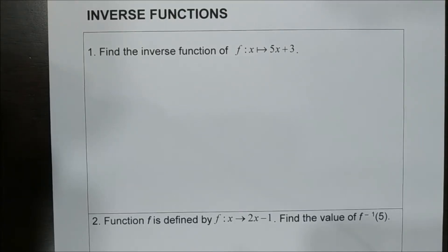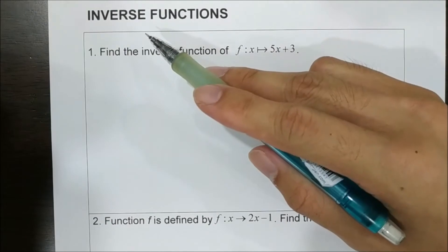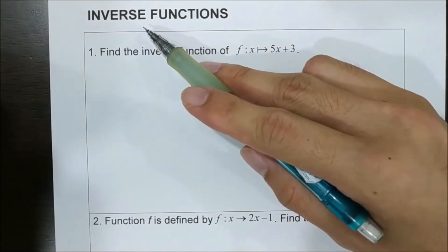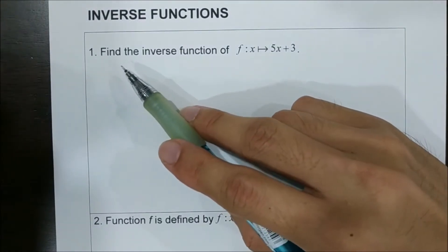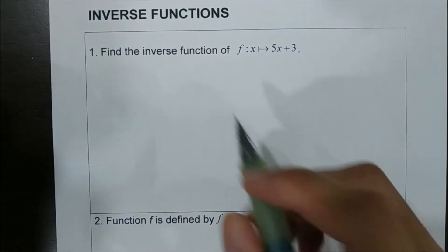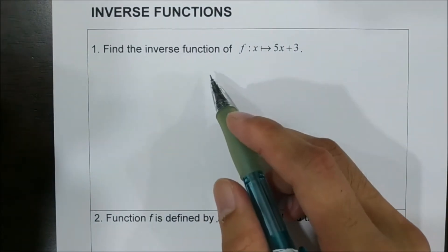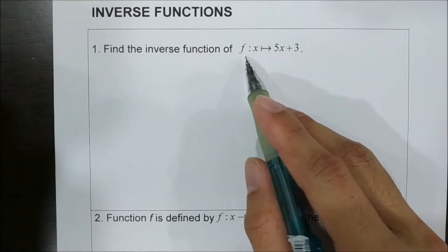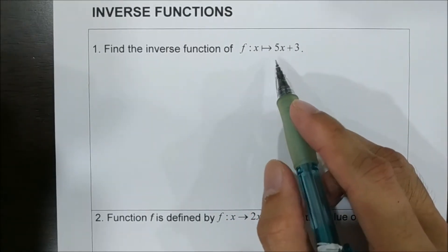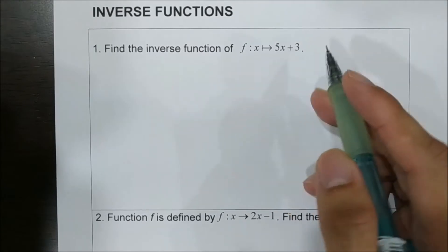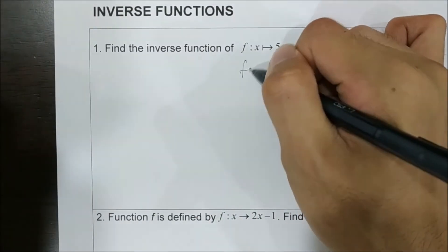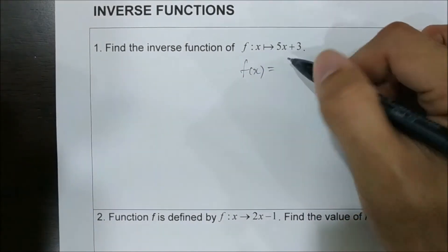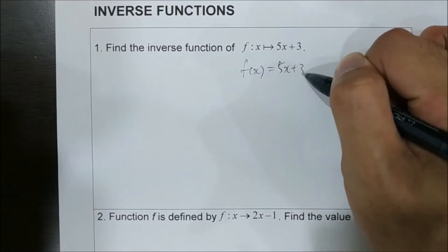Hello everyone. Right now we are going to look at the next part of a function chapter, which is called inverse functions. We start off with the basic one. Find the inverse function of a given function f(x), which maps x to 5x plus 3. Or we can also write this as f(x) equals to 5x plus 3.